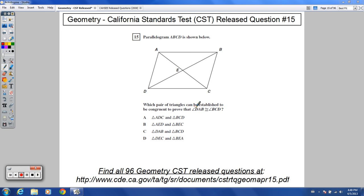It says which pair of triangles can be established to be congruent to prove that angle DAB, that's this angle right here, this whole angle is congruent to angle BCD.